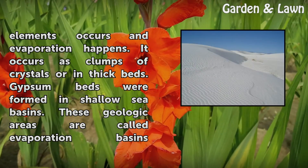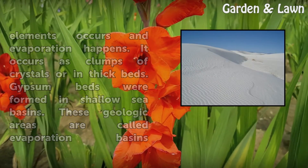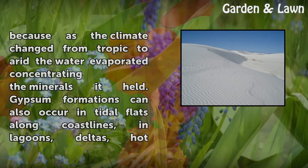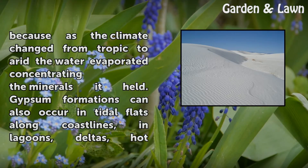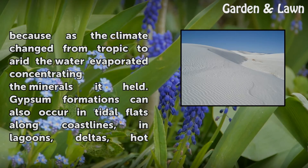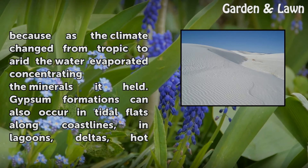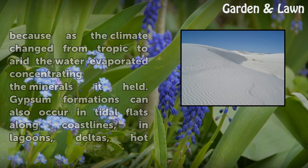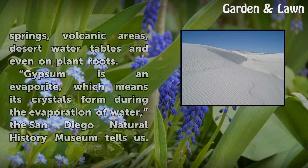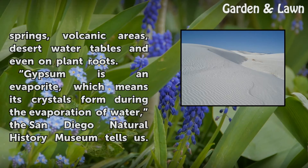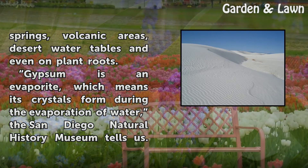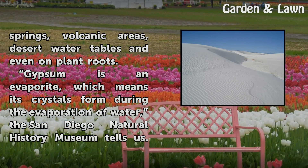Gypsum beds were formed in shallow sea basins — geologic areas called evaporation basins — because as the climate changed from tropical to arid, the water evaporated, concentrating the minerals it held. Gypsum formations can also occur in tidal flats along coastlines, in lagoons, deltas, hot springs, volcanic areas, desert water tables, and even on plant roots.